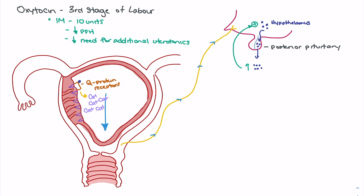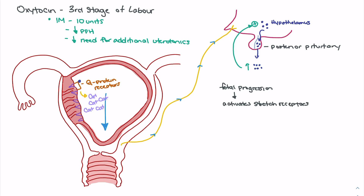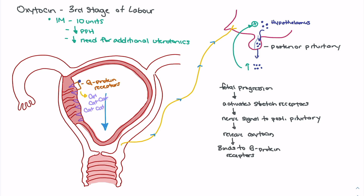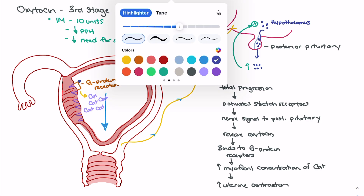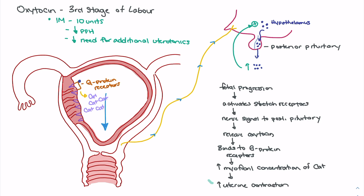To summarize the full mechanism: fetal progression activates stretch receptors, which activate nerves that signal the posterior pituitary to release oxytocin. Oxytocin binds to G protein receptors, leading to an influx of calcium into the myometrium myofibrils, increasing uterine contraction. The positive feedback loop then re-activates those receptors — recognizing pressure in the areas of the pelvis involved in childbirth — leading to more nerve signaling to the posterior pituitary, more oxytocin release, more G protein receptor activation, increased calcium concentration, and further increase in uterine contraction.